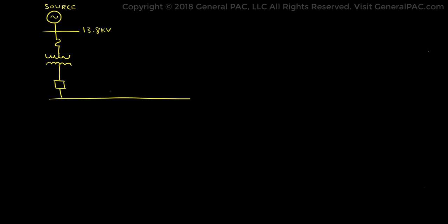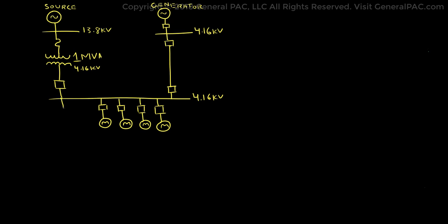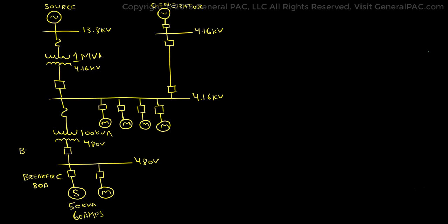To explain this concept, let us again consider a facility with a 50 kVA, 60 amp static load. As discussed in previous parts, all breakers should be rated at some percentage above the full load amps of the downstream load. Breaker C is rated at 80 amps at 480 volts, breaker B is 120 amps at 480 volts, and breaker A is rated 100 amps at 4.16 kilovolts.